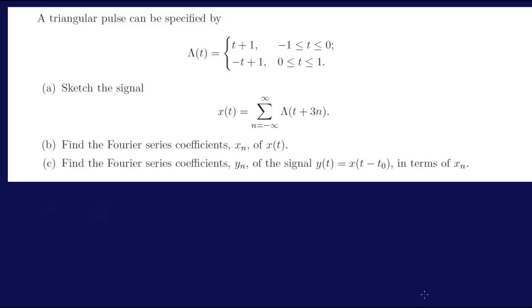The first question, part A, is to sketch the signal x(t). Now x(t) is given as a function of λ(t), so we can basically rewrite x(t) specifically to see what it is exactly.